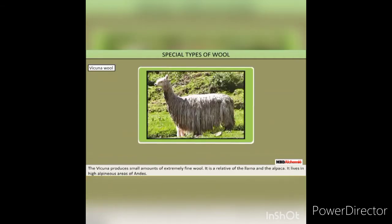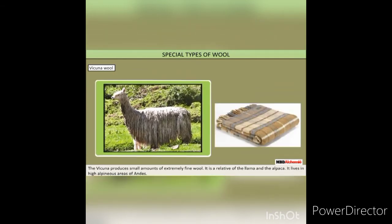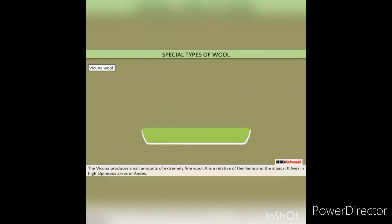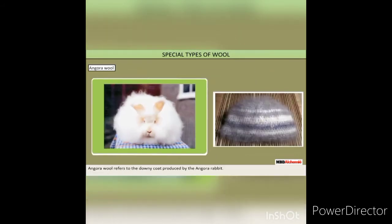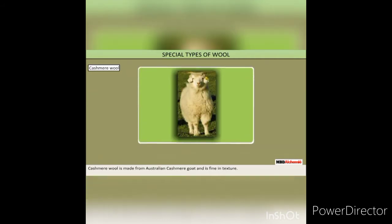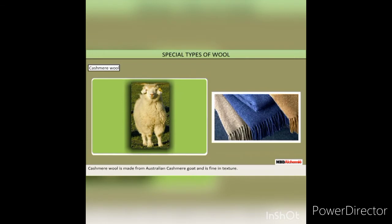The Vikuña produces small amounts of extremely fine wool. It is a relative of the Llama and the Alpaca and lives in high alpine areas of the Andes. Angora wool refers to the downy coat produced by the Angora rabbit. Cashmere wool is made from the Australian cashmere goat and is fine in texture.